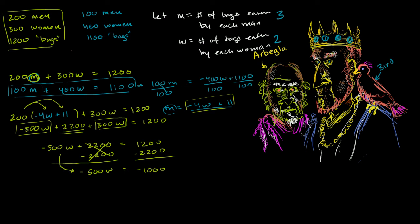And this is starting to look interesting. Because if we divide both sides by negative 500, we get w is equal to 2, which is the exact same answer that we got when we tried to solve with elimination. We got the exact right answer.